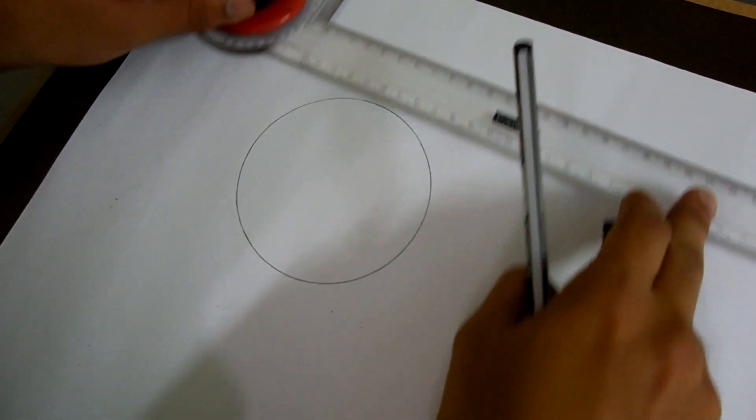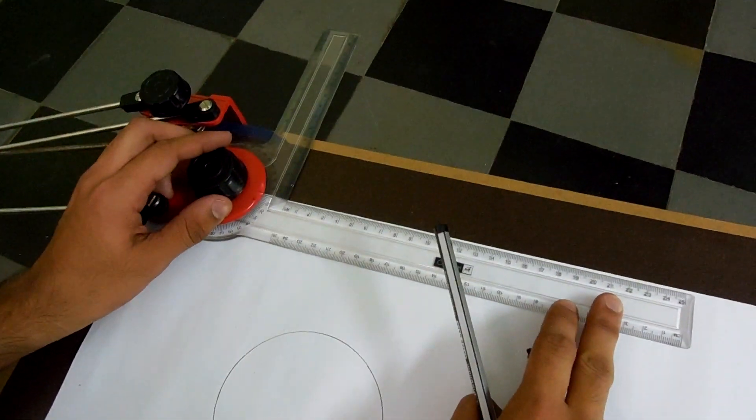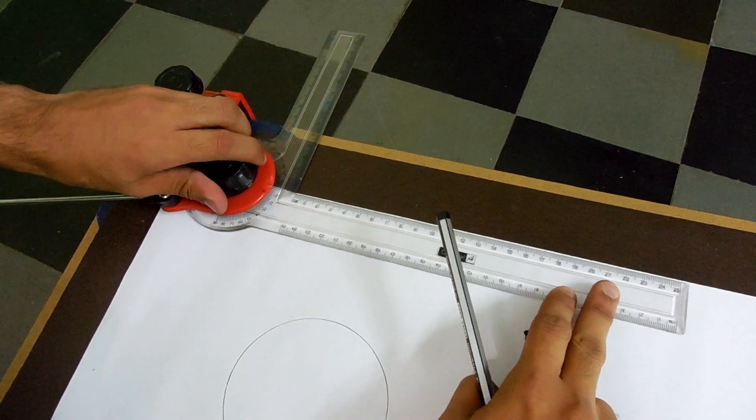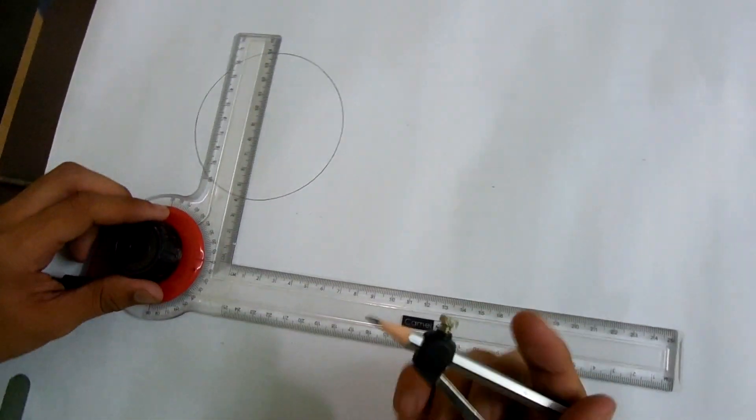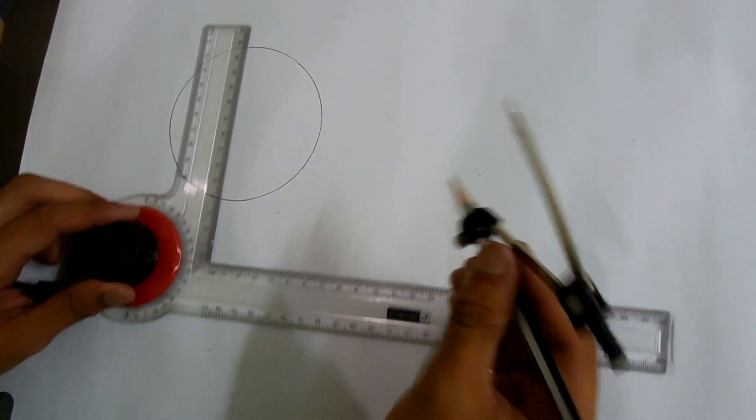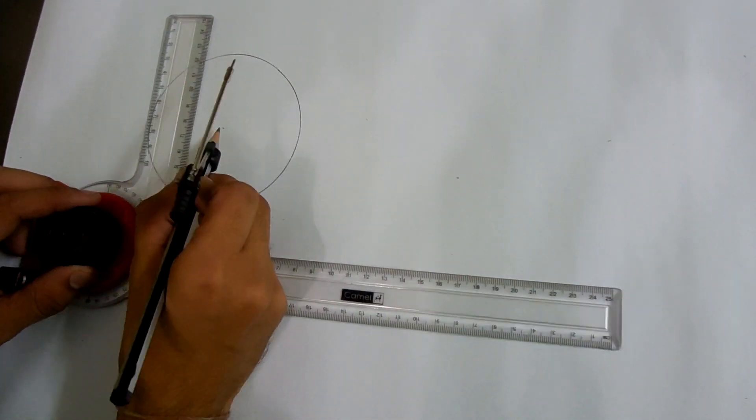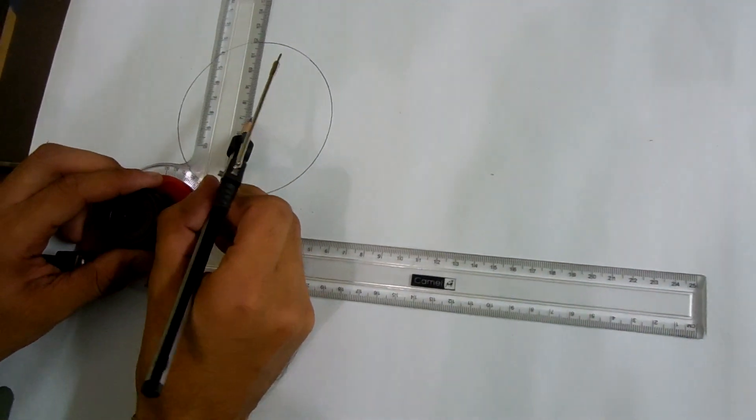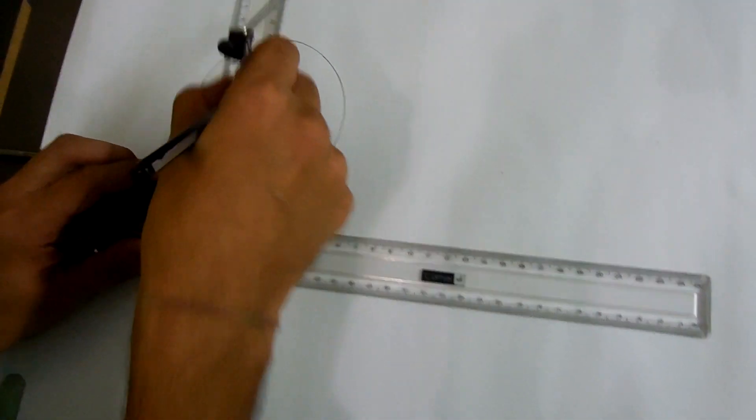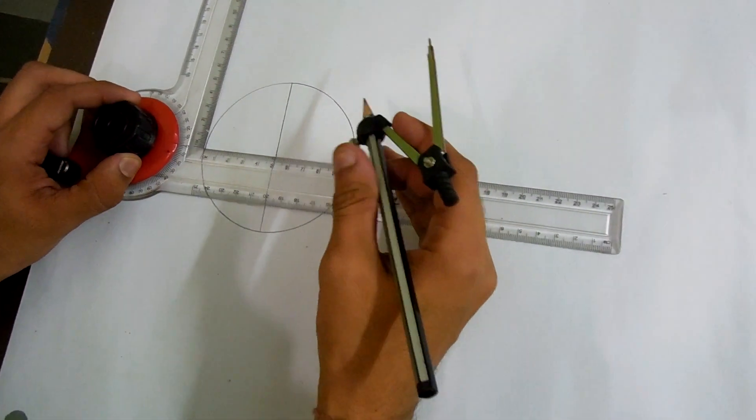Then we are making both perpendicular passing through its center.